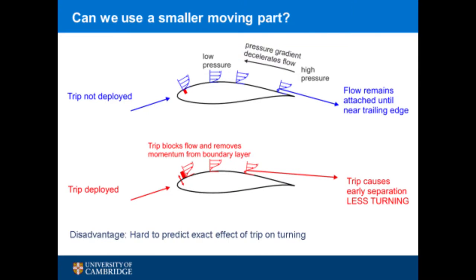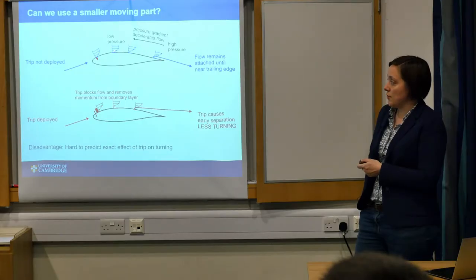Even the flap is a pretty big moving part, and we might want to address torque fluctuations too, so we thought: can we use a smaller moving part? We considered using a trip. On the surface of an aerofoil, the flow very close to the surface has to be stationary — it decelerates to a standstill because it's stuck to the surface. This forms a boundary layer, where you've got slow flow near the blade and fast flow further away.